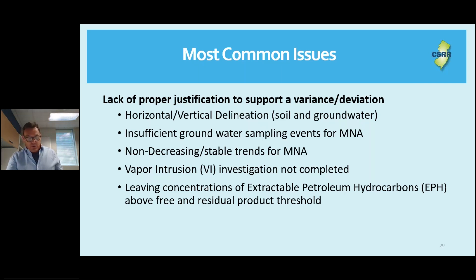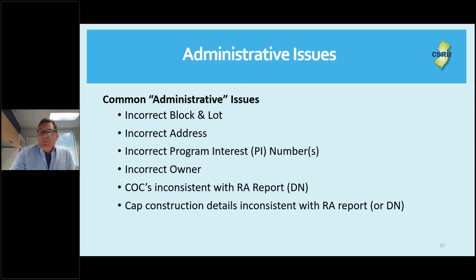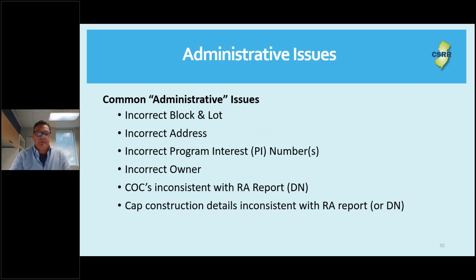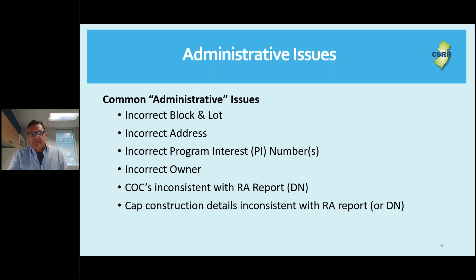Common technical areas include: insufficient horizontal/vertical delineation; insufficient groundwater sampling events to support MNA non-decreasing or stable trends; vapor intrusion not completed; and leaving concentrations of EPH above free and residual product threshold. It doesn't necessarily mean that justification didn't exist — it just wasn't properly documented. Let's go through these in a bit more detail.